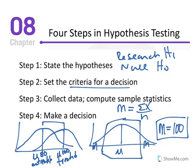The unknown treated population is the focus of the research question. The purpose of the research is to determine what would happen if treatment were administered to every individual in the population — though in reality, we wouldn't administer treatment to the entire population. Instead, we take a sample from the untreated population, administer treatment, draw conclusions about the treatment's effect on that sample, and apply those conclusions to the treated population.